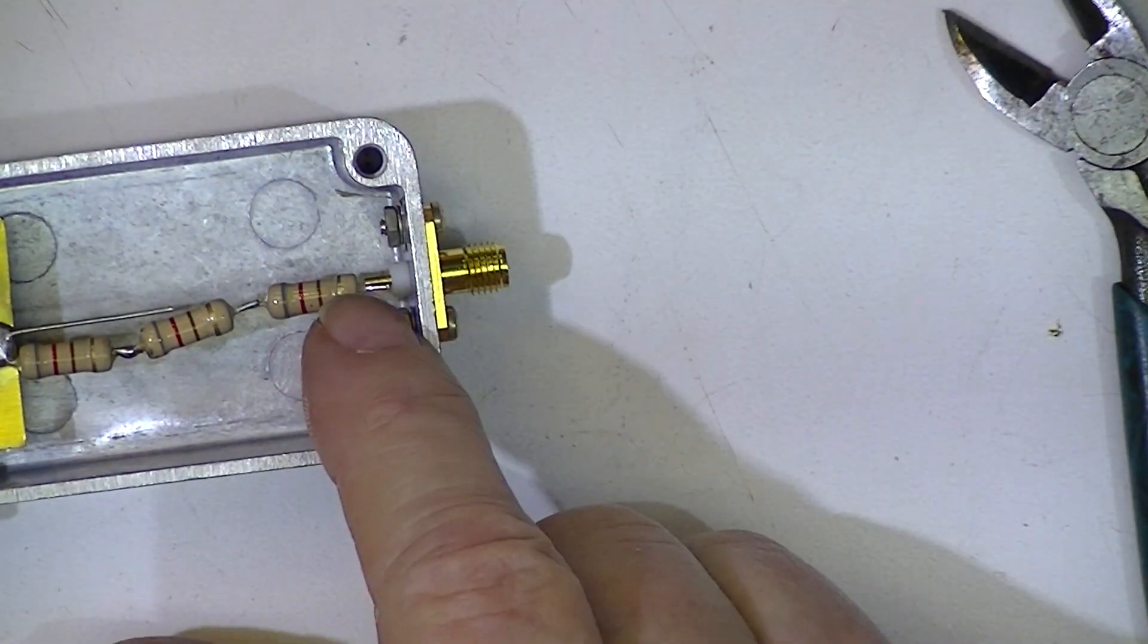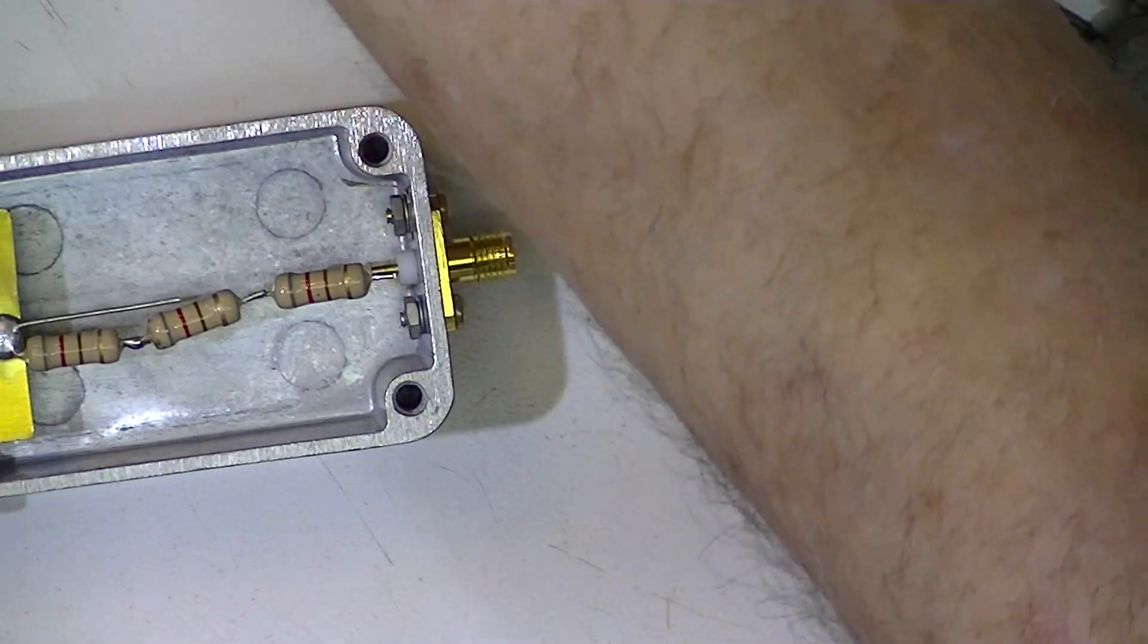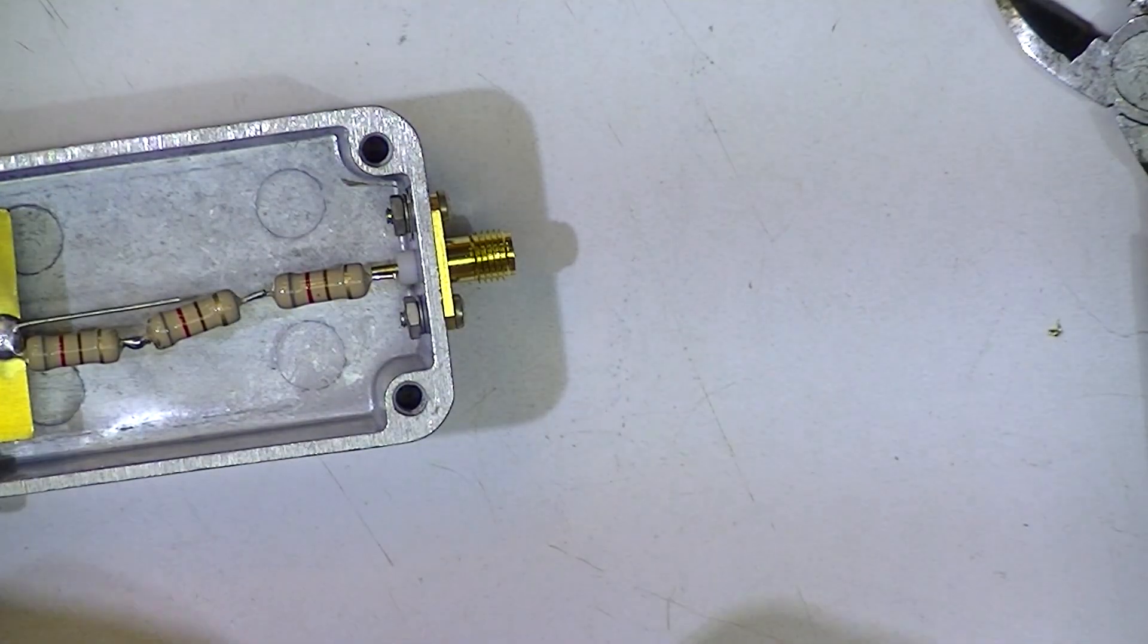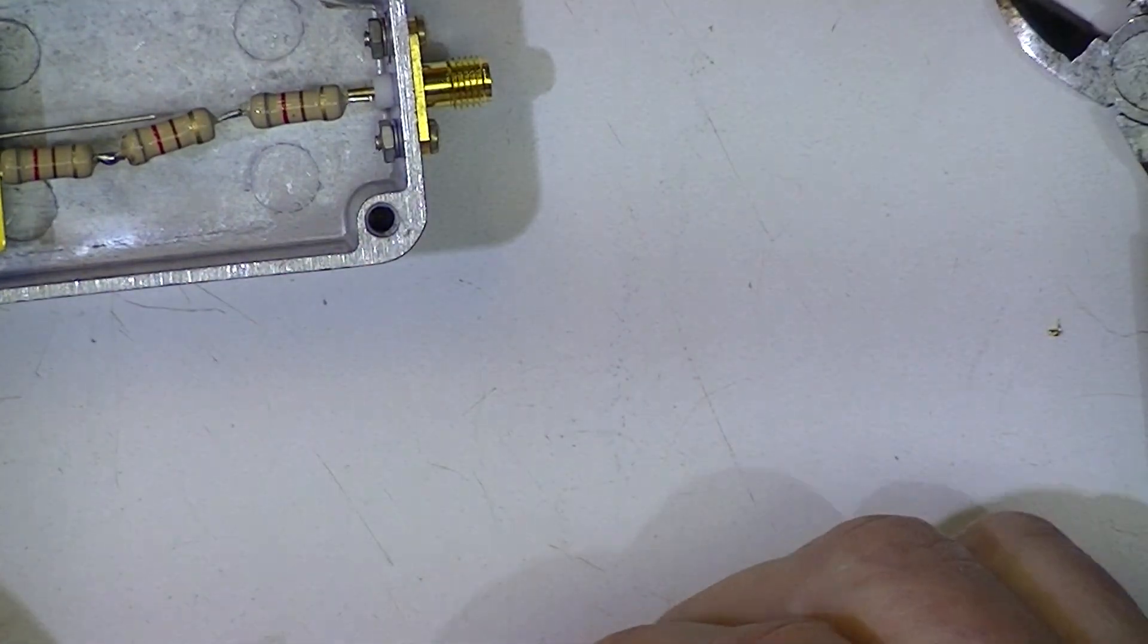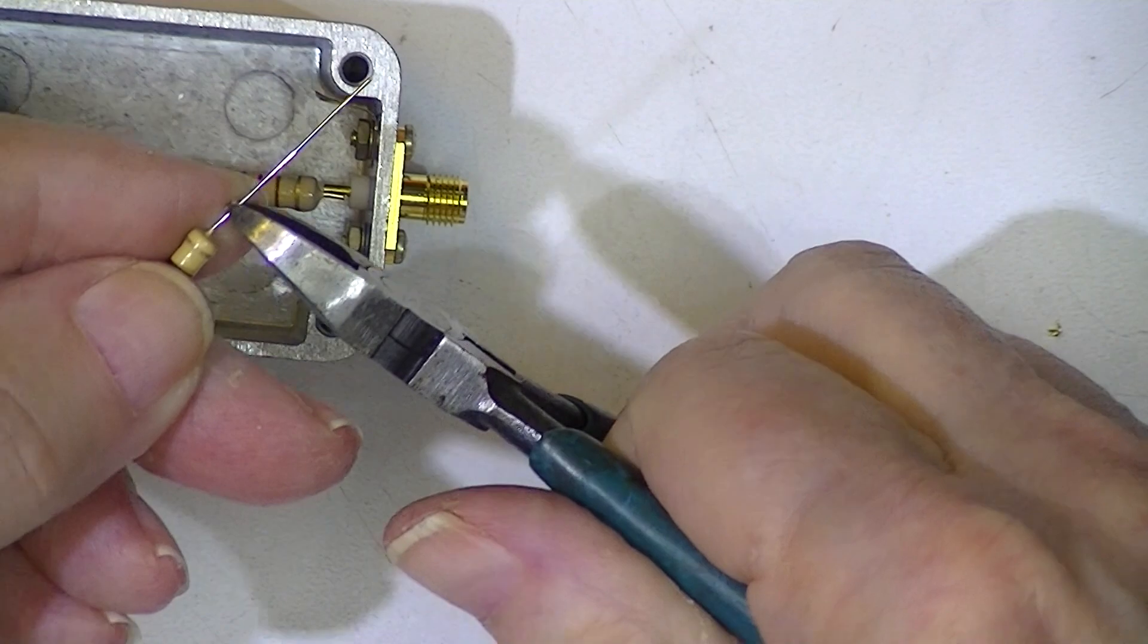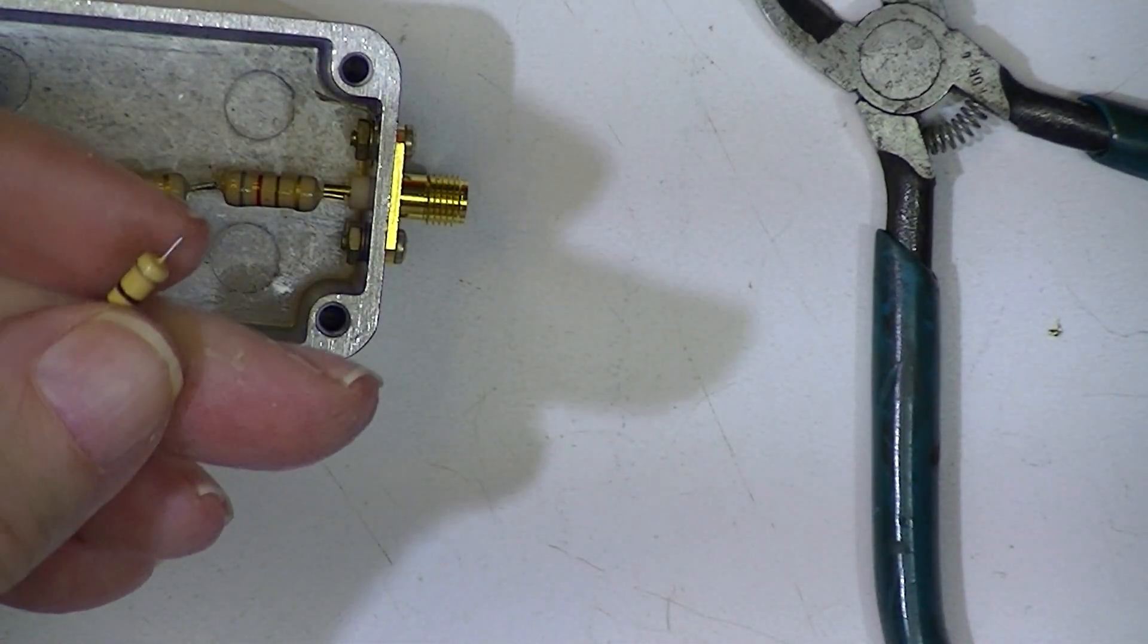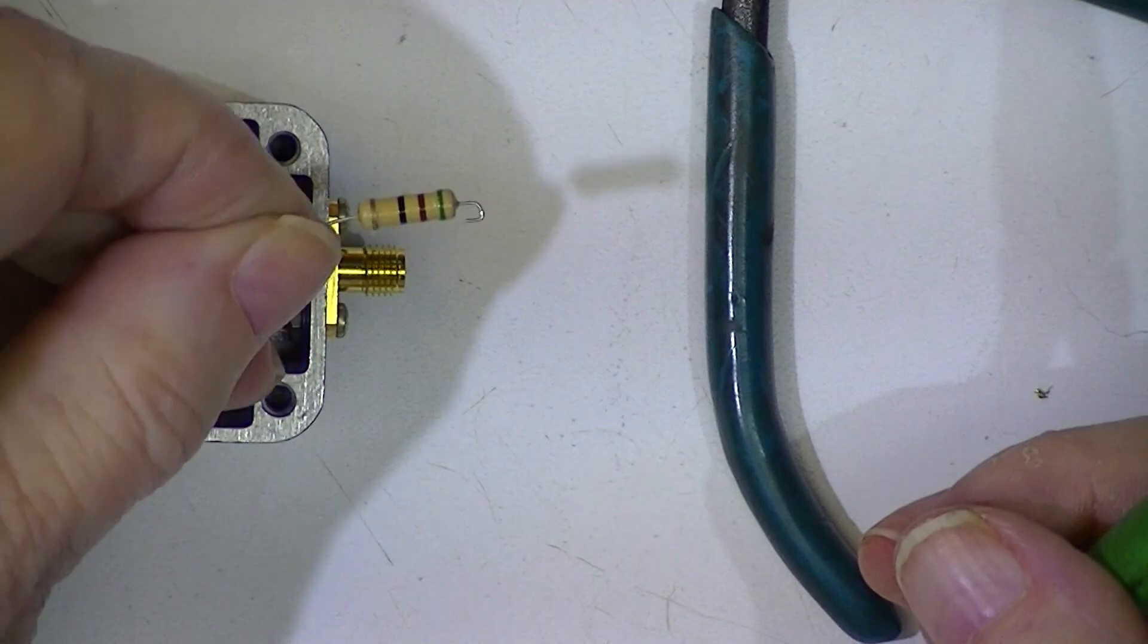Now we have to solder this connection, this connection with the 51 ohm terminating resistor. It's going to be a tight fit. What I'm going to try to do is cut the lead on the 51 ohm resistor very short and make a curlicue out of it, sort of like a pig's tail. And I'm going to try to hook it.